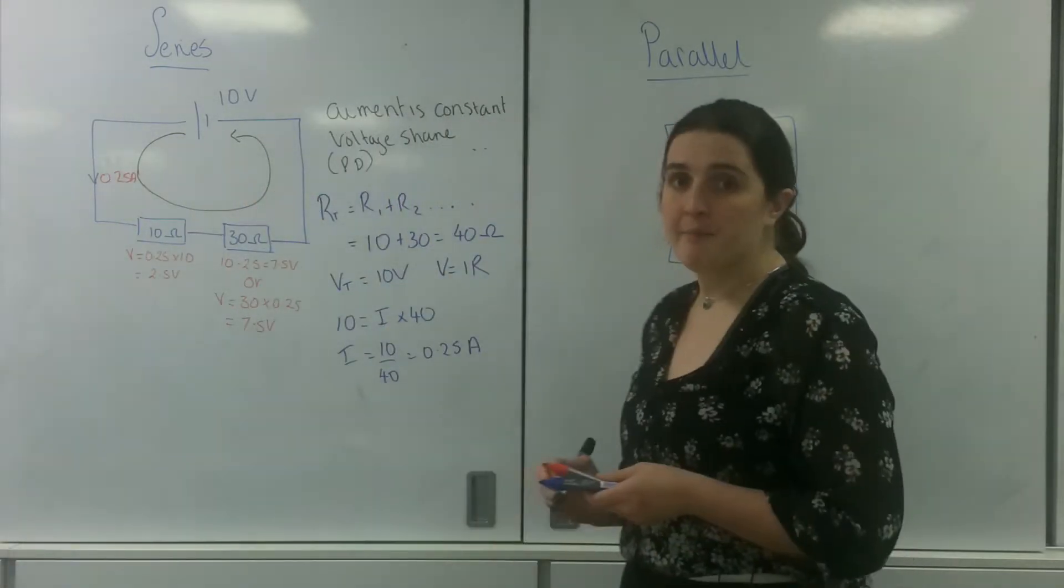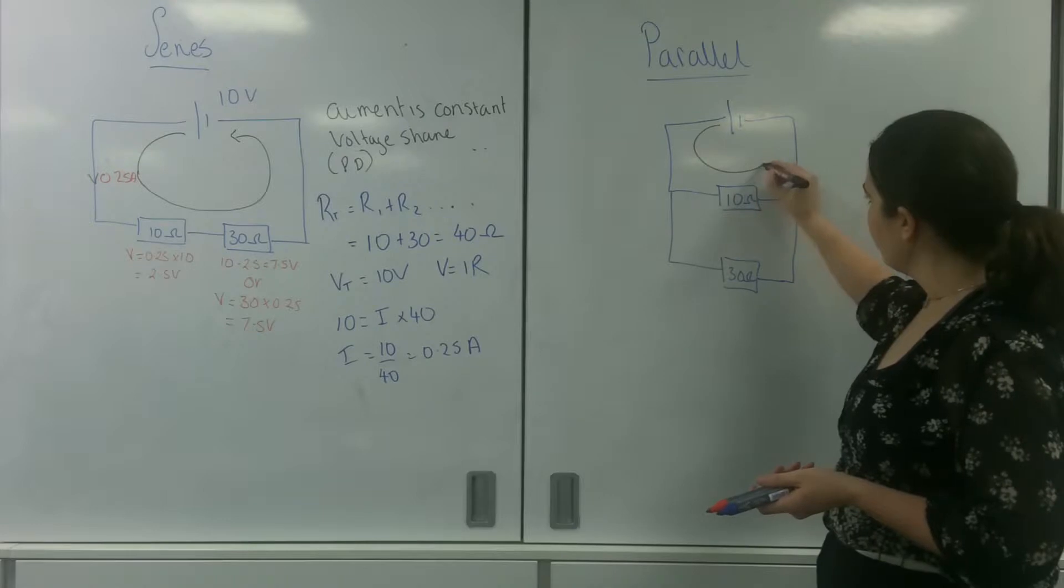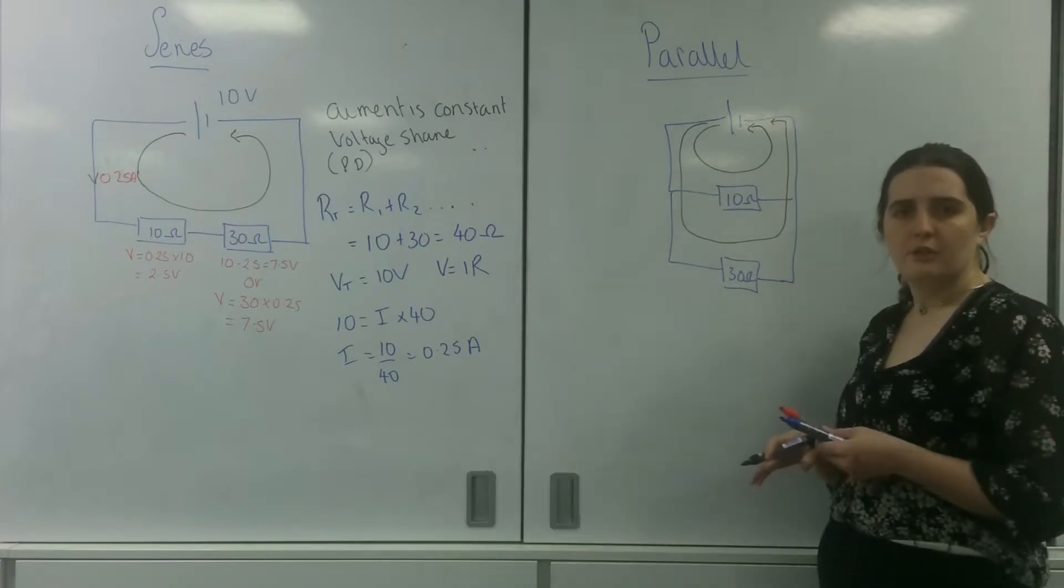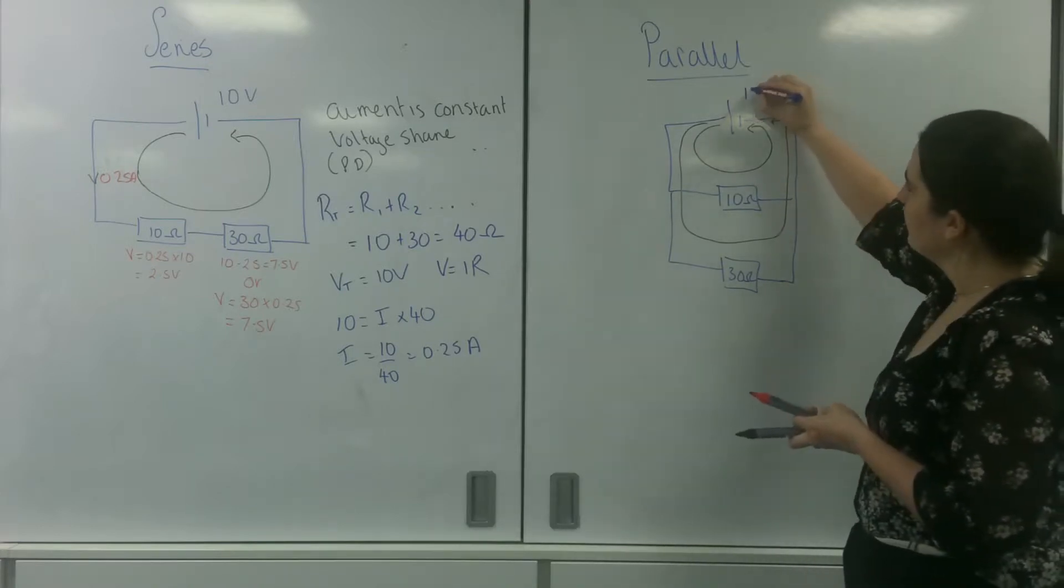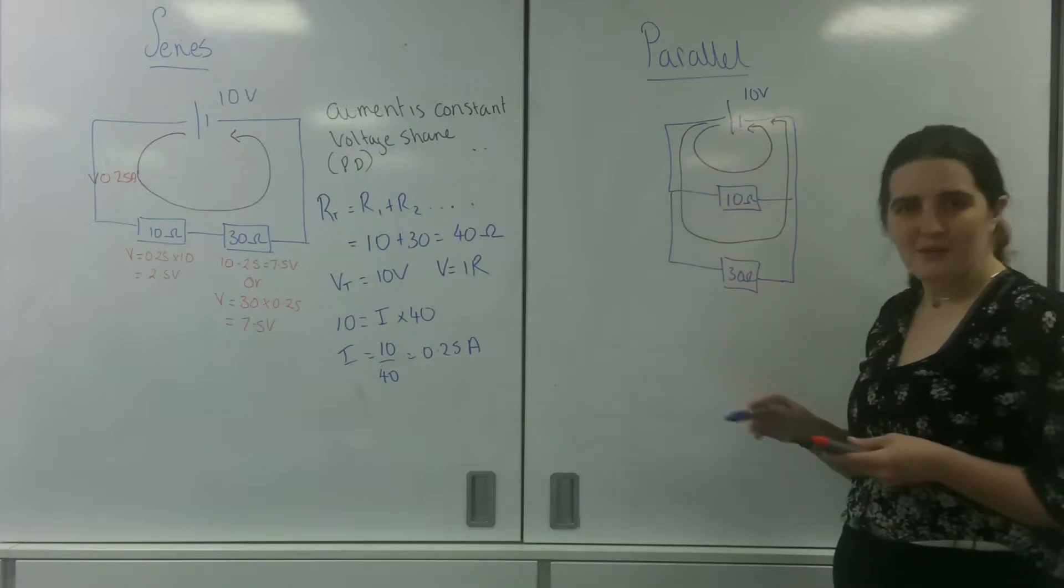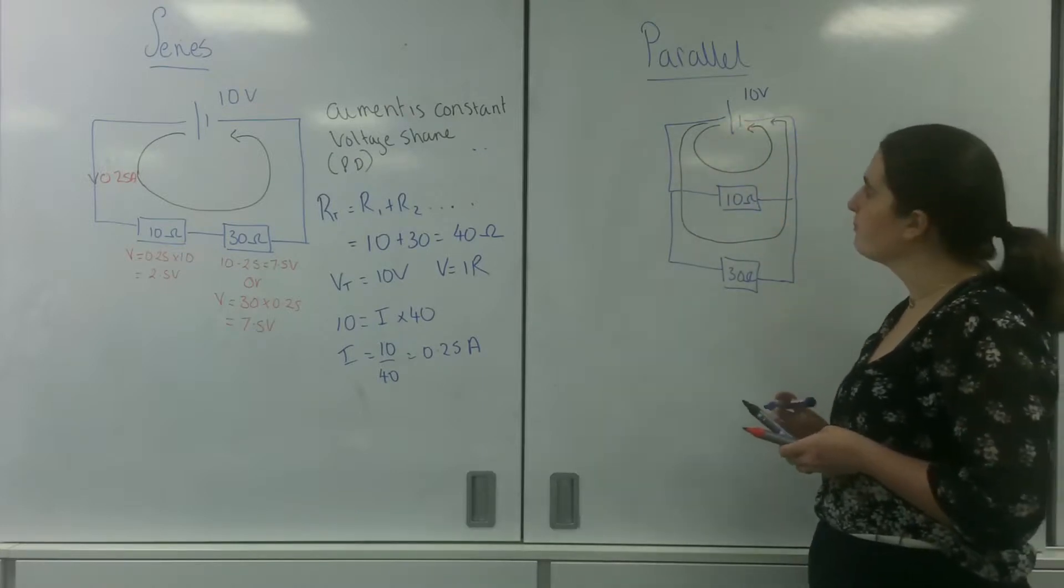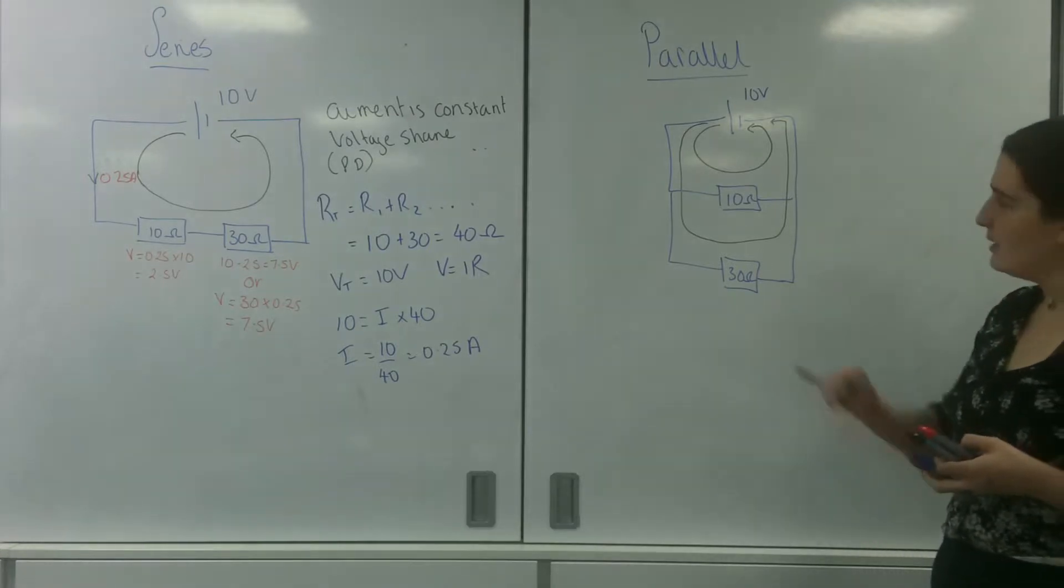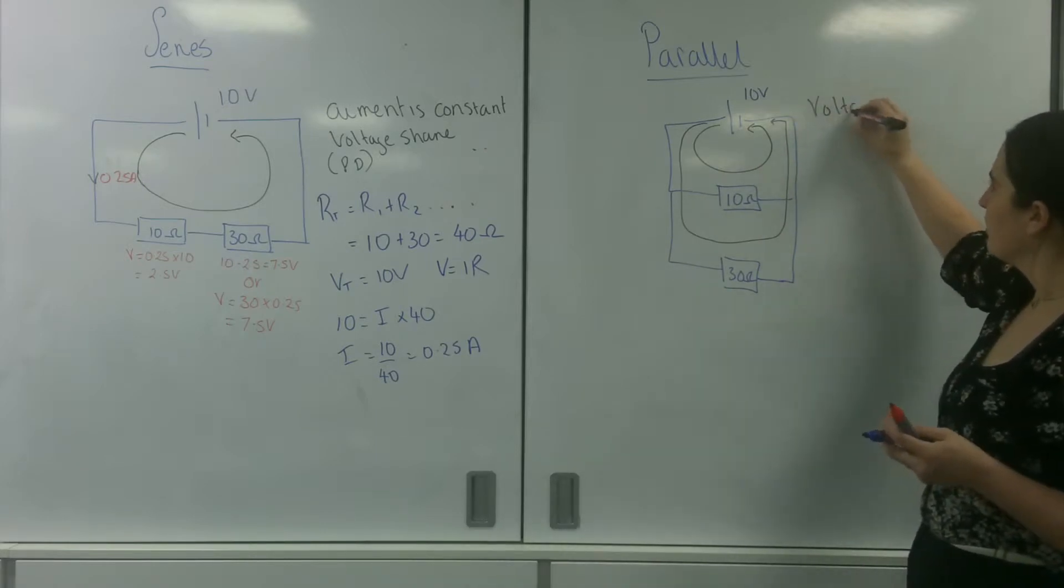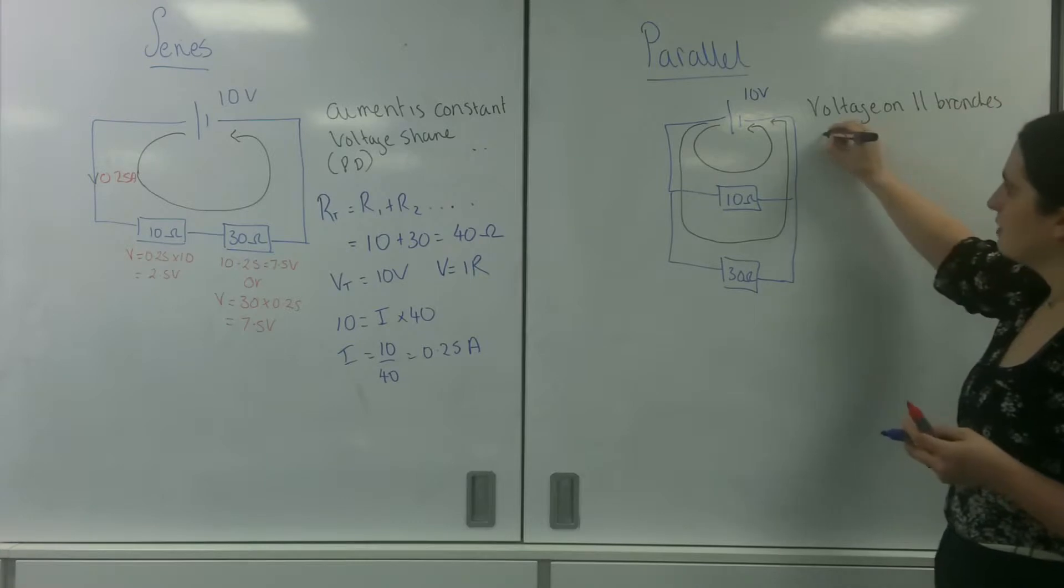Now in a parallel circuit I'm going to explain it using Kirchhoff's voltage law. Kirchhoff's voltage law, I'll remind you, in one loop I must lose the potential I have. So if this is 10 volts again, this is a loop and this is a loop. I can't go back on myself, it's not how it works. You have to go from positive to negative, positive to negative. So what that means is that this 10 volts must be used up on this 10 ohm resistor. So the voltage on parallel branches is constant.